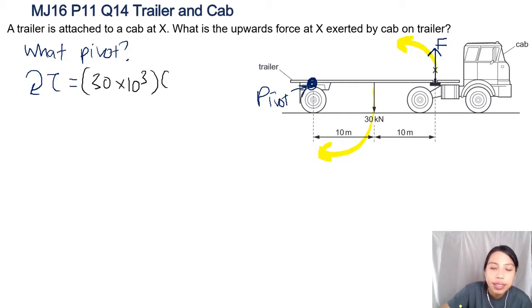So 10 meters. What's that torque? 30 times 10 to the 3 times 10. Wow, that's a very big torque: 300 times 10 to the 3 newton meters.